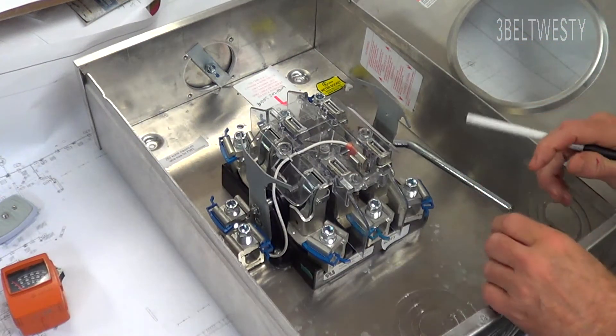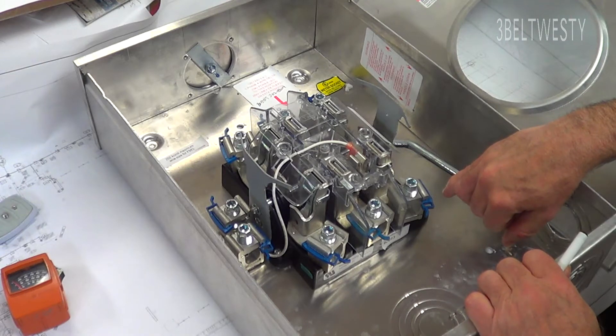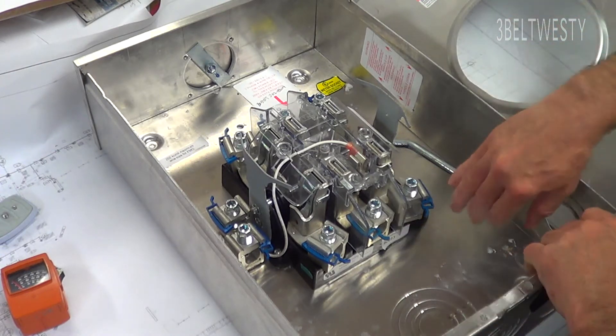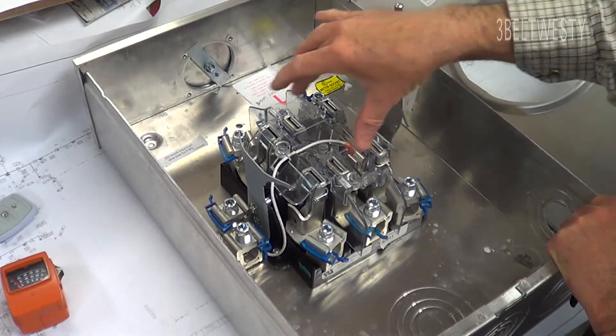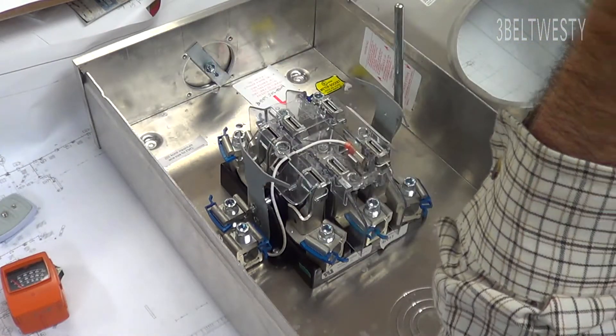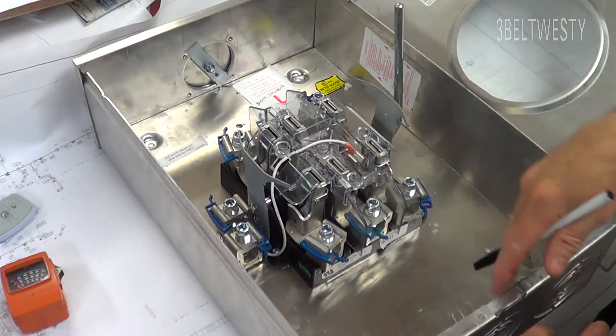This is the bypass. It's used so before the meter man pulls the meter, he goes through and pulls this over, and that shorts the lugs together. Then he can pull the meter out and there's still power going to the customer - you don't interrupt the power if you have to swap the meter out.